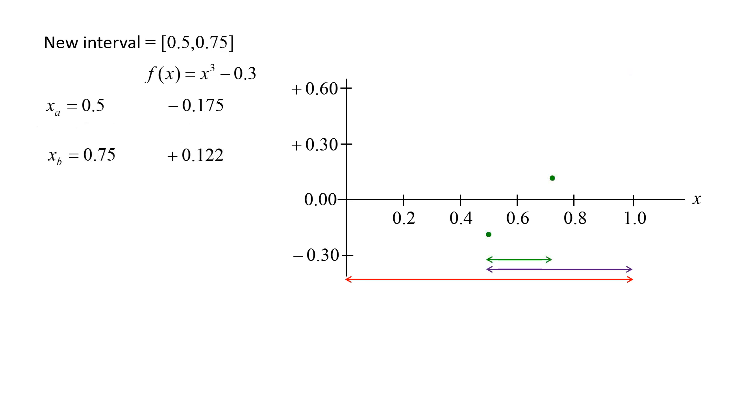The new interval is 0.5 to 0.75. The value of xb becomes 0.75, and the value of xa remains 0.5.